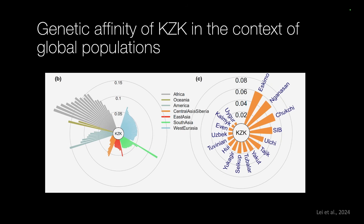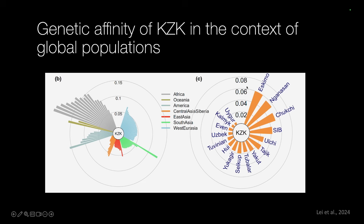Looking at modern Kazakh individuals, the FST values tell us how different populations are from each other. Modern Kazakh populations are most closely related to other Turkic groups such as the Uyghur and Uzbek, but are more distant to Siberian groups such as the Nganasan and populations like the Tajik.